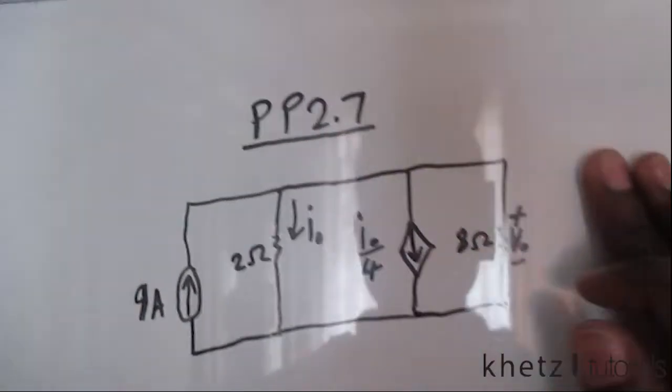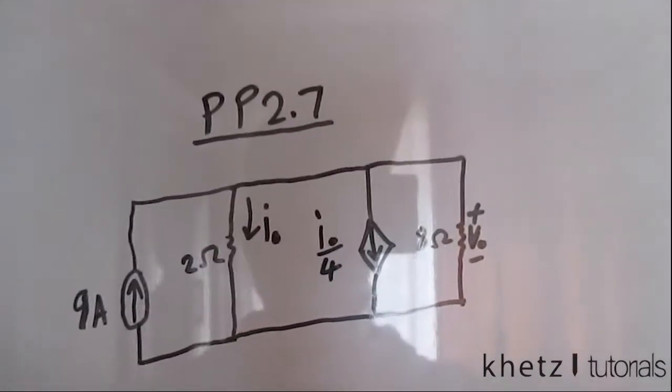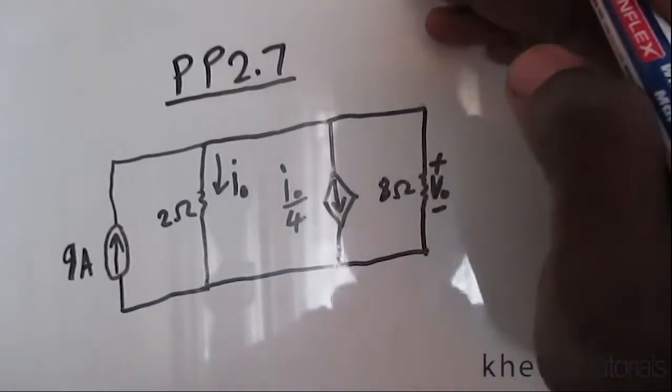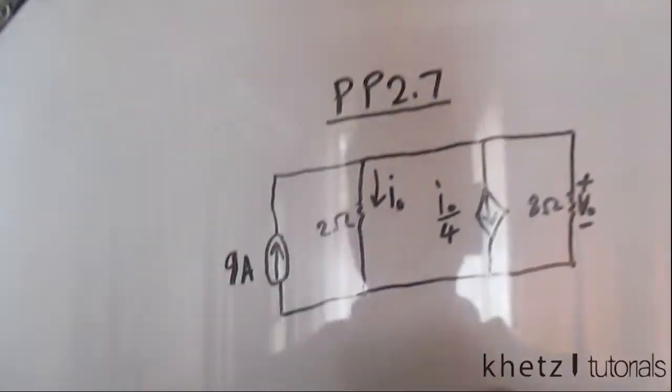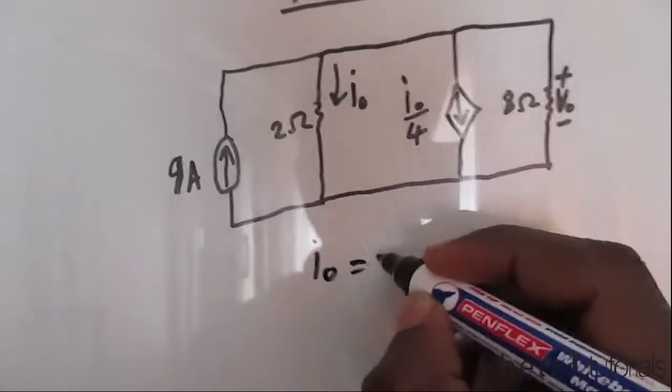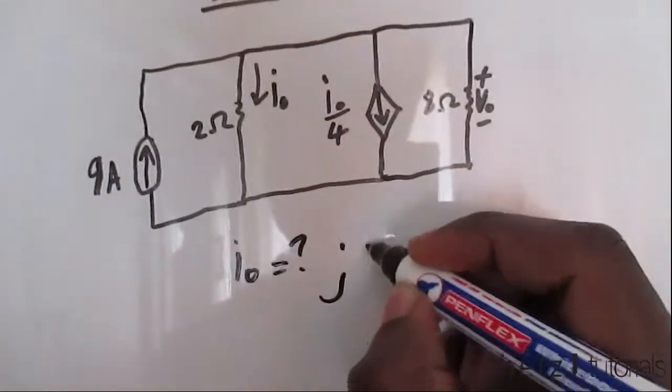Welcome to Khetz tutorials. In this video we're going to be covering practice problem 2.7. The question says find i₀ and v₀.